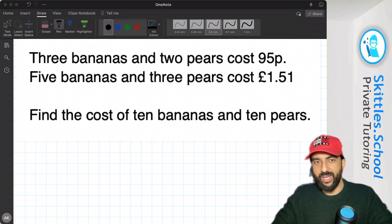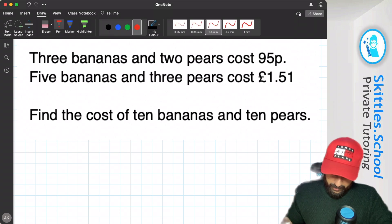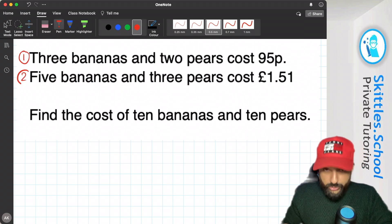So straight away, I'm thinking this is simultaneous equations. Because there's two values we don't know, the bananas and the pears, and it also looks like there's two equations.